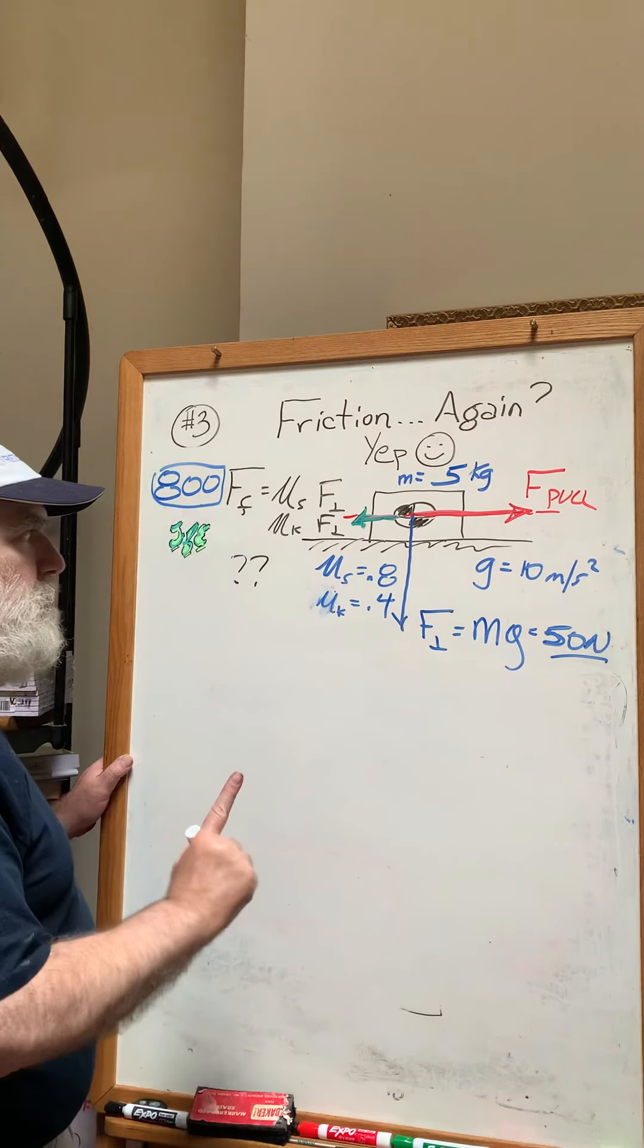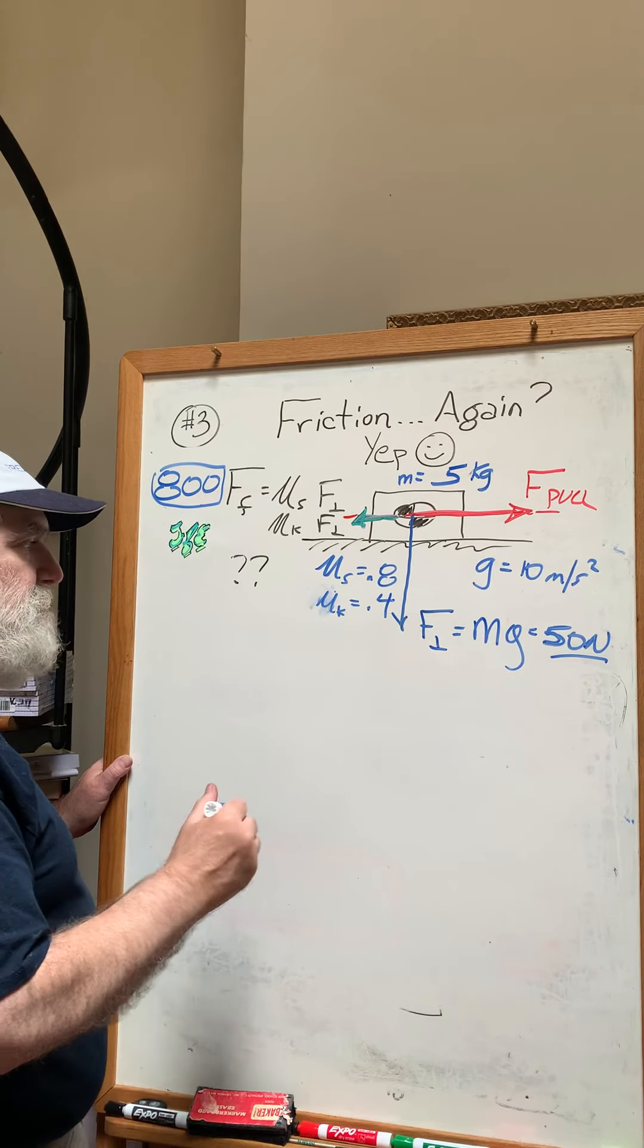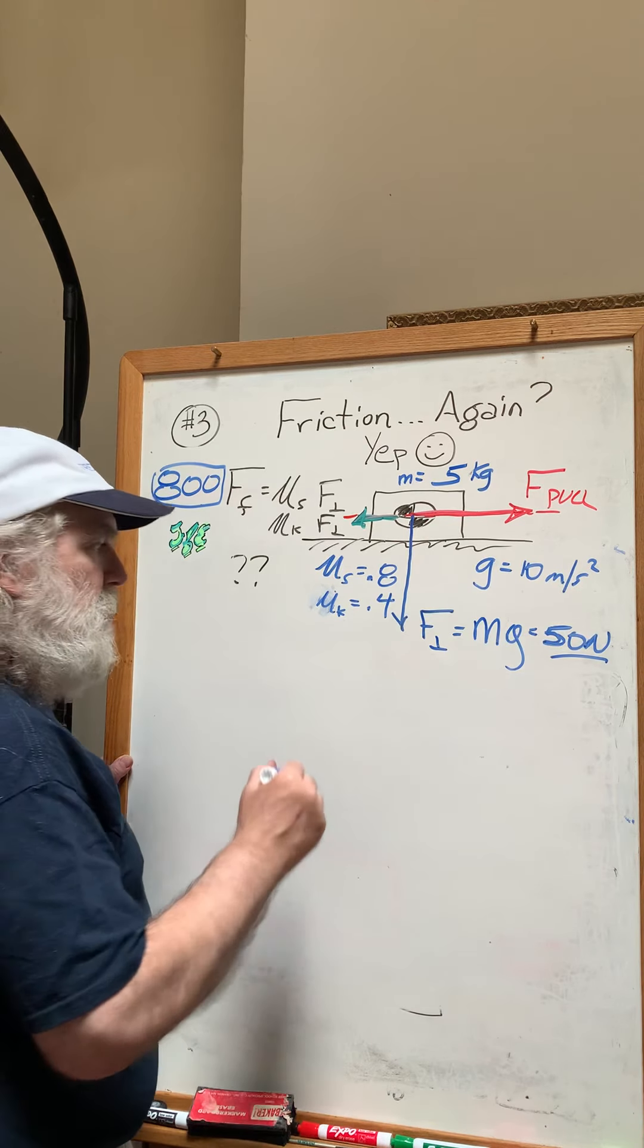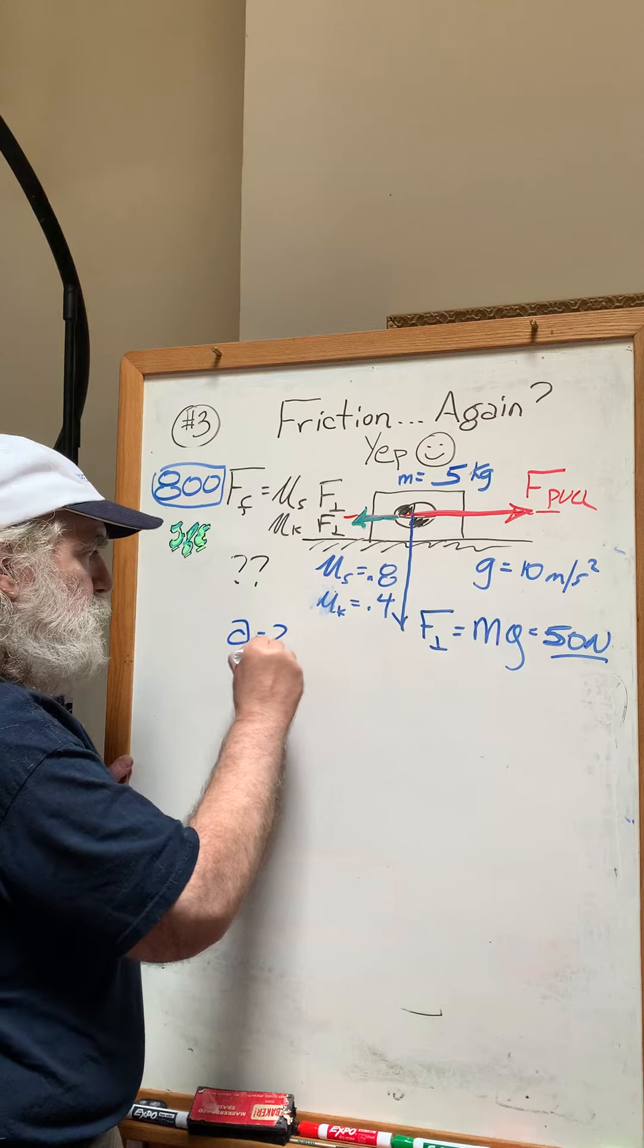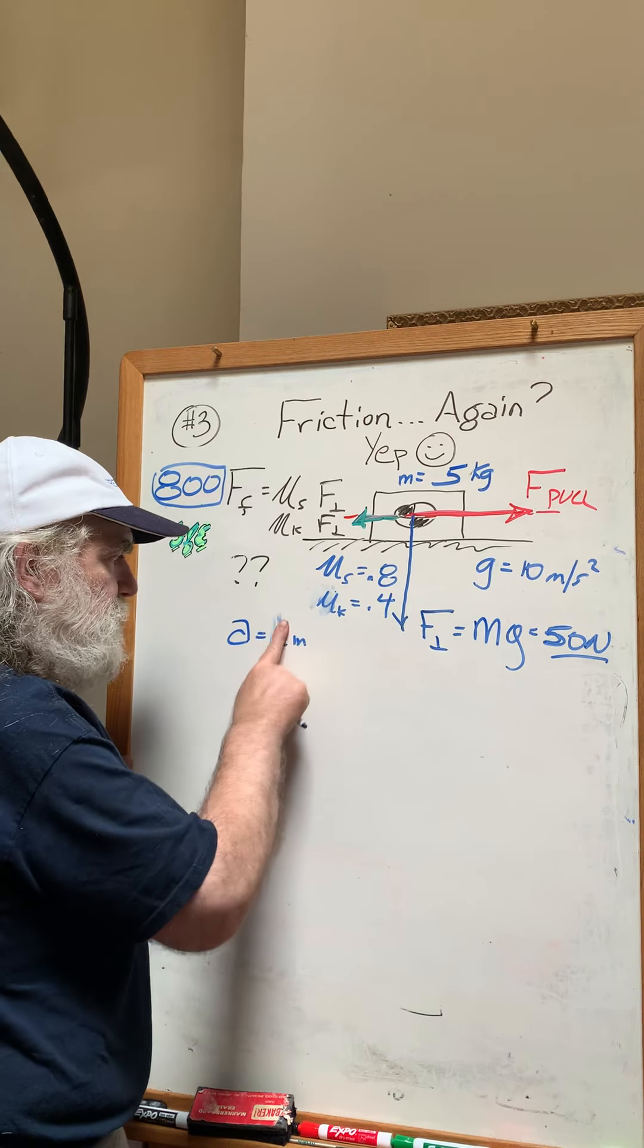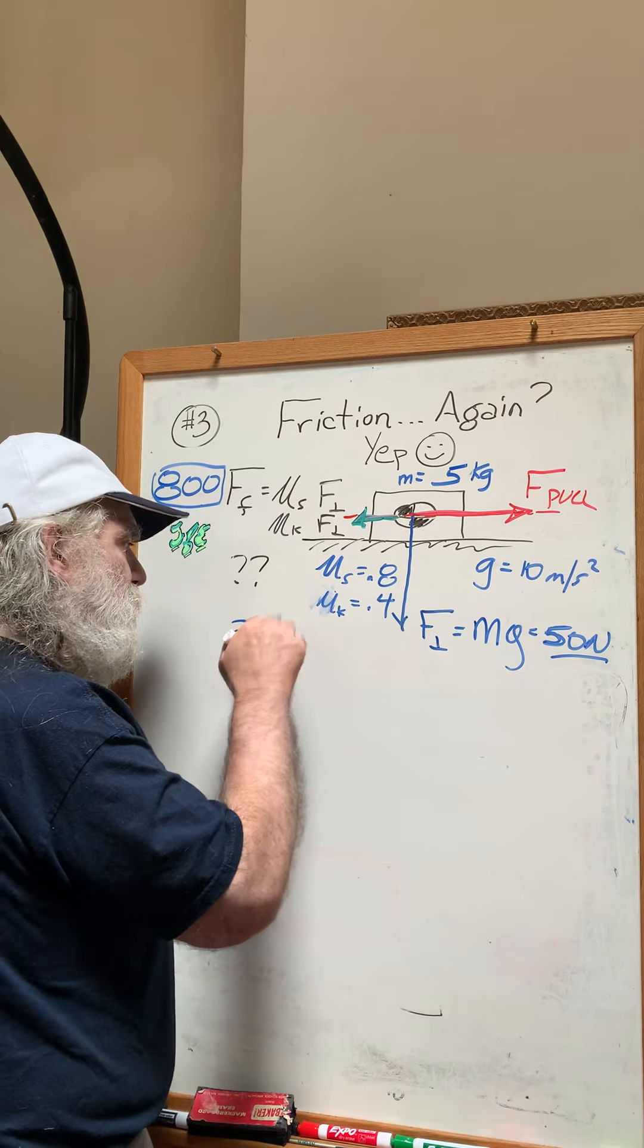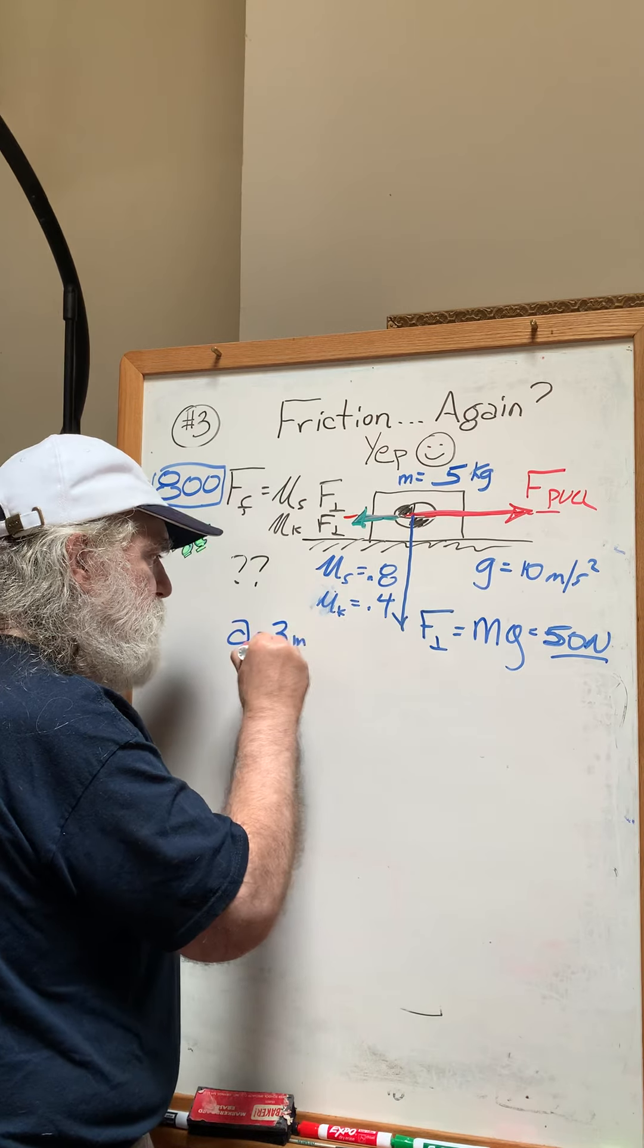The kinetic frictional coefficient mu k is 0.4. Keep the numbers friendly since you don't get a calculator on the SSATs. So the force of friction—to get an acceleration which I'll say is three meters per second squared, that is the desired acceleration.